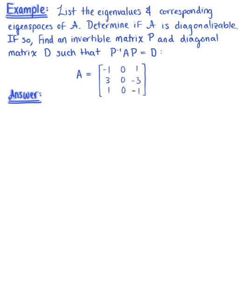List the eigenvalues and the corresponding eigenspaces of matrix A. Determine if matrix A is diagonalizable. If so, find an invertible matrix P and diagonal matrix D, such that the inverse of P times matrix A times matrix P equals the diagonal matrix D.